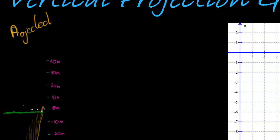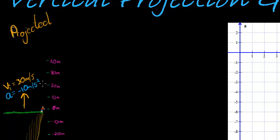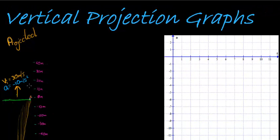A projected object means I'm throwing it upwards. We're going to look at an initial velocity of 30 meters per second, throwing it upwards. Let's choose our downward acceleration as negative 10 meters per second squared - I'm simply rounding from negative 9.8 to negative 10. Why negative? Because I'm choosing upwards as positive, and that will therefore make the downward acceleration negative.